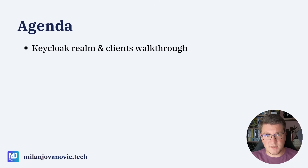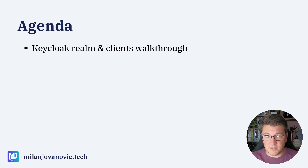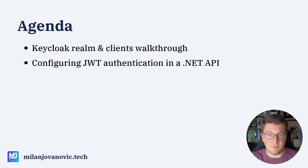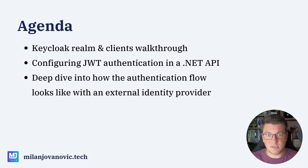We're going to start by quickly setting up our Keycloak realm and client. I already covered this in my initial video about Keycloak, so if you get confused at any point, I recommend that you watch that video first. Then we're going to configure authentication using JSON Web Tokens inside of a .NET API, and we're going to do a deep dive into how the authentication flow looks like when we are using an external identity provider.